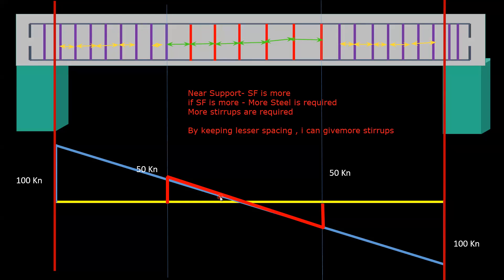Now you may ask: since shear force goes to 0 kilonewton at the center, that means I don't require any stirrup there — no steel requirement at all. Yes, according to mathematics, at that zero point I don't require any stirrups or steel.